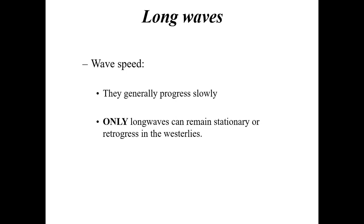For wave speeds of long waves at the jet stream level, they generally progress slowly. Only long waves can remain stationary or retrogress — move back westerly against the westerly wind flow. These long waves can get stuck in place. For example, during a negative North Atlantic Oscillation, a huge upper-level ridge sits in Greenland across the North Atlantic for possibly weeks, keeping troughs and colder temperatures over the eastern U.S. and favoring east coast storm development. In summertime, a stationary long-wave ridge over the central U.S. can result in severe drought conditions.